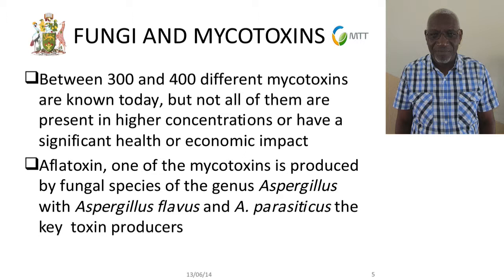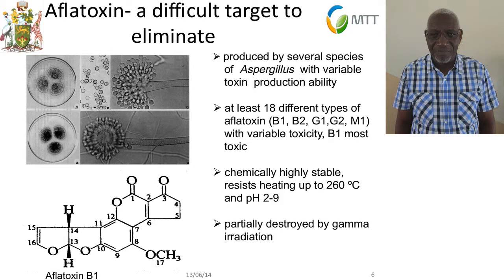There are about 18 different aflatoxins, but the most known with variable toxicities are B1, B2, G1, G2, M1, and M2, produced by Aspergillus flavus. When it grows and produces these, they fluoresce — the names B1, B2, G1, G2 refer to the type of fluorescence. B1 is the most toxic.